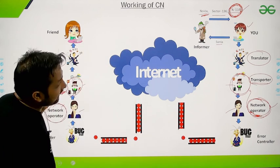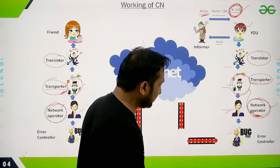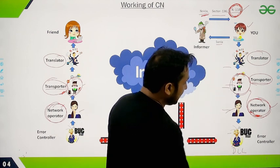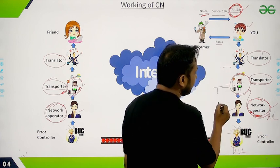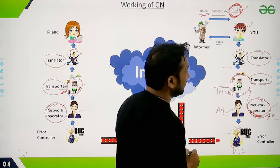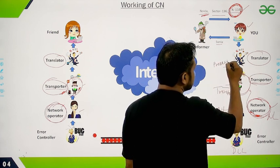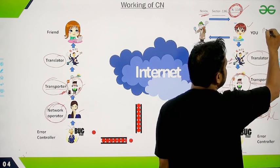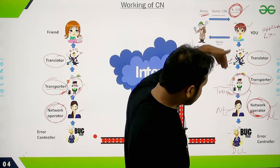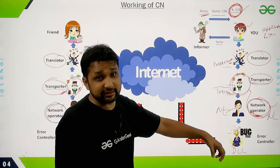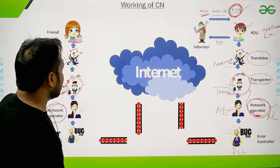These people in the story represent the different layers involved in the internet. The Transporter represents the Data Link Layer. The Network Operator represents the Network Layer. The Error Controller represents the Transport Layer. The Translator represents the Presentation Layer. And above all of these is the Application Layer. These are the actual layers present in the network. We will discuss what each layer does in detail later.